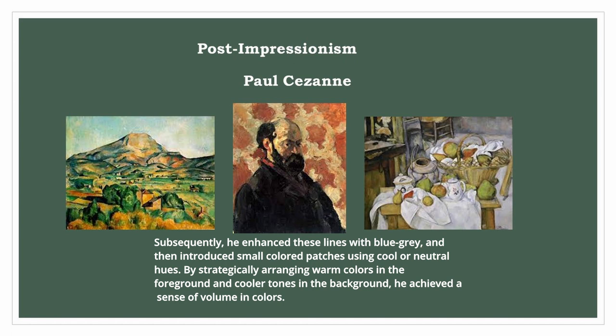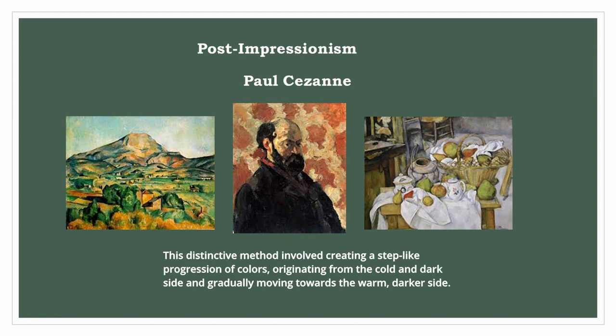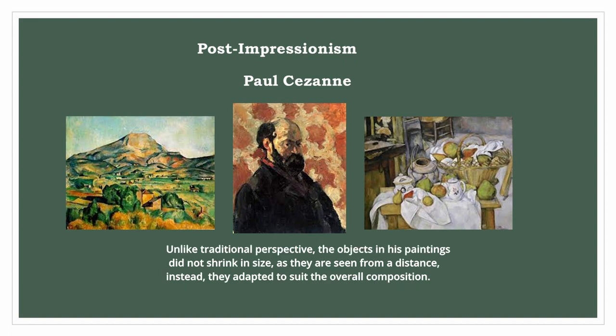By strategically arranging warm colors in the foreground and cooler tones in the background, he achieved a sense of volume in colors. This distinctive method involved creating a step-like progression of colors, originating from the cold and dark side and gradually moving towards the warm, darker side. Unlike traditional perspective, the objects in his paintings did not shrink in size as they are seen from a distance; instead, they adapted to suit the overall composition.